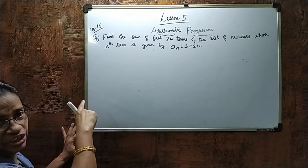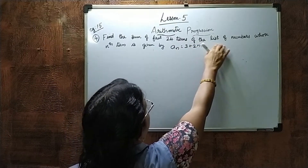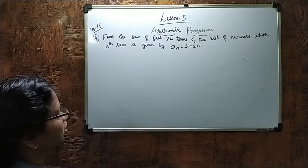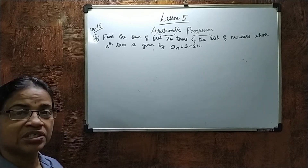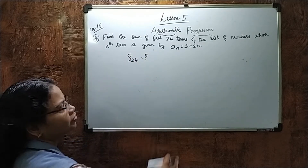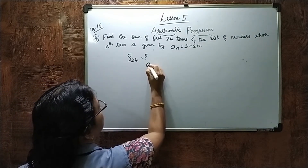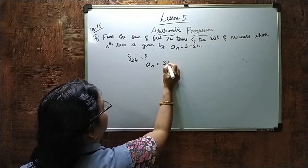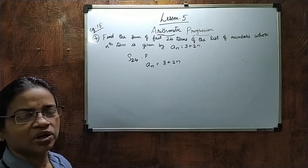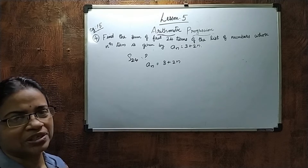This is example number 15, question number 4. Find the sum of the first 24 terms of the list of numbers whose nth term is given by An equals 3 plus 2N. We need to find S24, using the formula S24 equals 24 by 2 into A plus An.